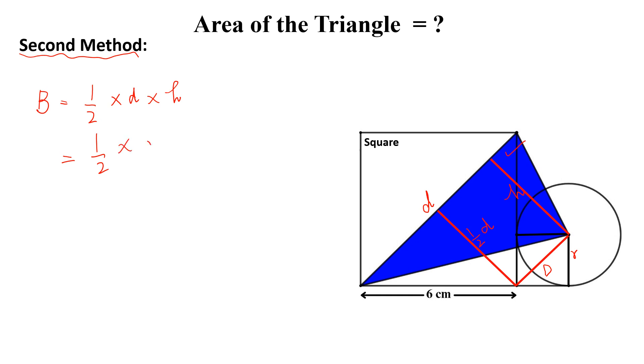Now the height of this blue triangle is equal to half of the diagonal and the diagonal of this square is equal to 6 square root of 2 centimeter.